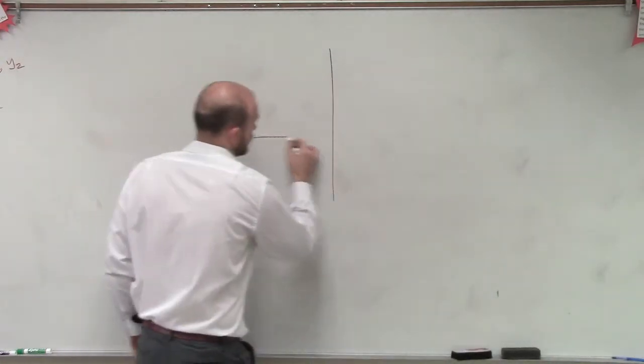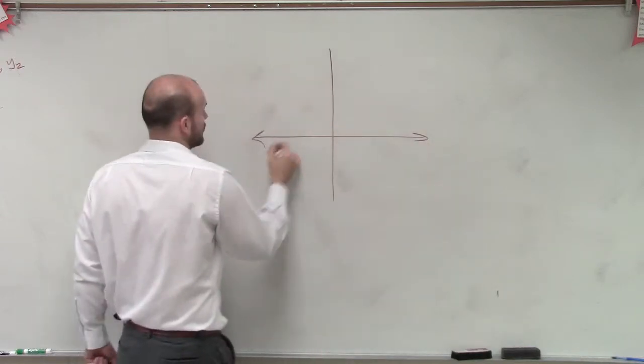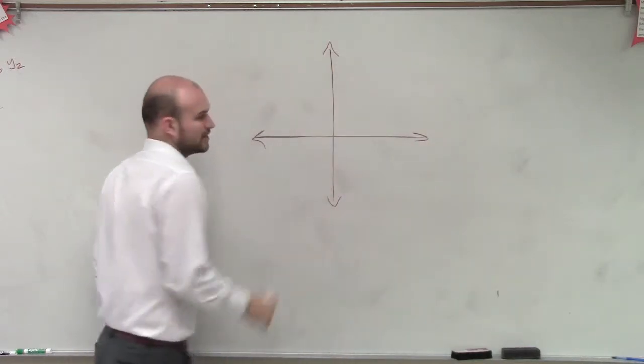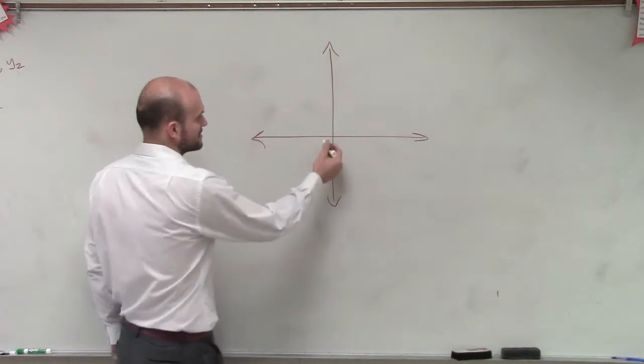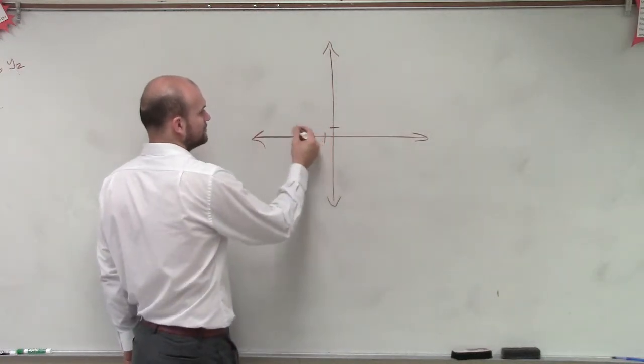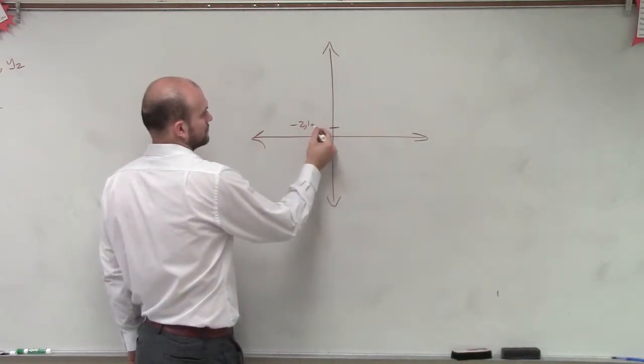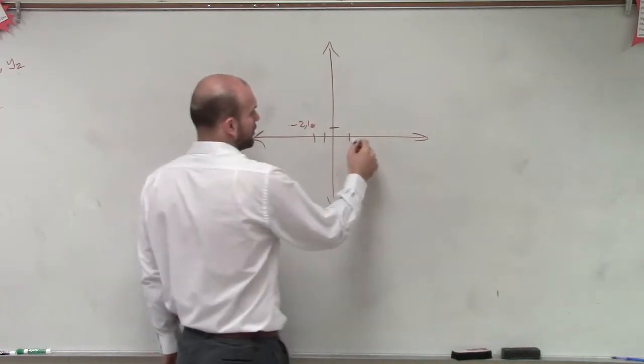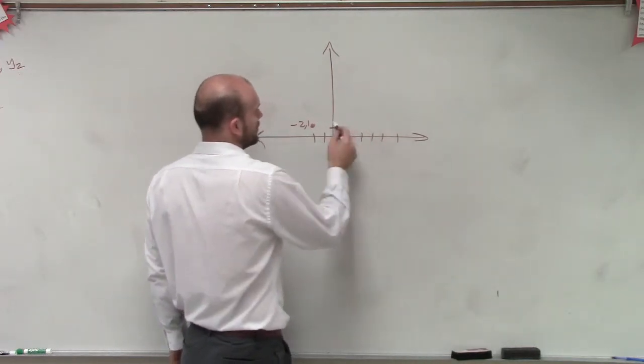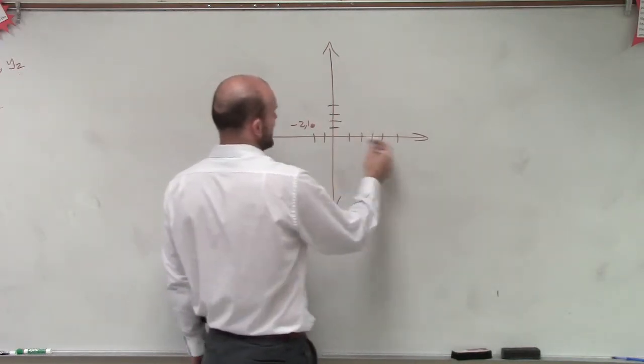So let's say you're given a coordinate grid. On that coordinate grid, you're given two points. Let's do negative 2, 1. And then let's find another point: 1, 2, 3, 4, 5. So let's do 5, 3.